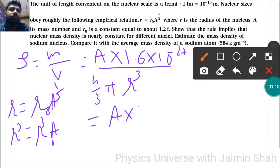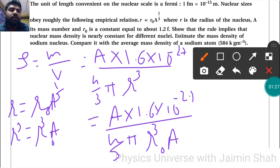We get A × 1.6 × 10^-27 upon 4/3 π r₀³ A. So A gets cancelled out. Now we're left with 1.6 × 10^-27 upon 4/3 π r₀³.